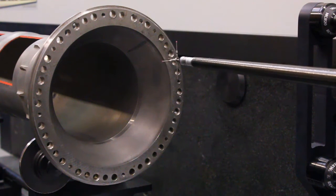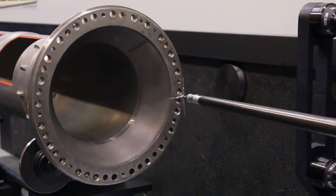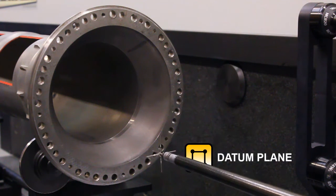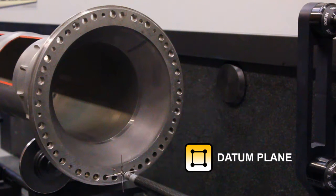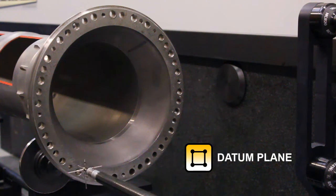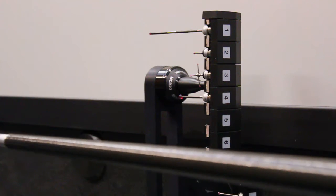The principle of measurement on the LBM is to measure all features from one datum and thus reduces the need for moving the component. Any positional resetting or redatuming of the components will increase the budget of measurement uncertainty. The LBM eliminates this problem.